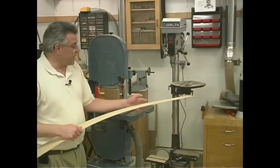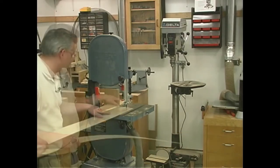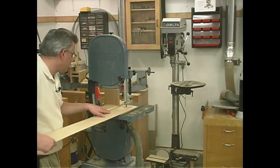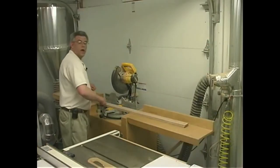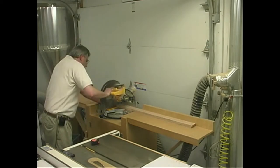To rip my lamination down to its appropriate width I'll be using my band saw. I just moved over my resaw fence, lowered the guides down, and it's a real easy cut. I'll stack them all together here on the compound miter saw and cut them off to about twenty and a half inches long.